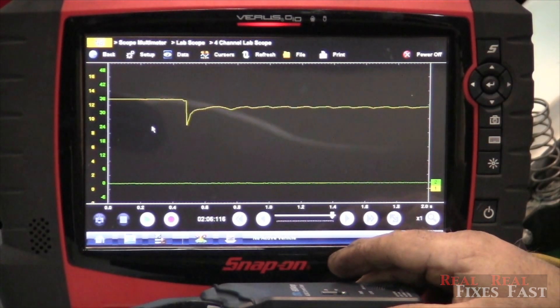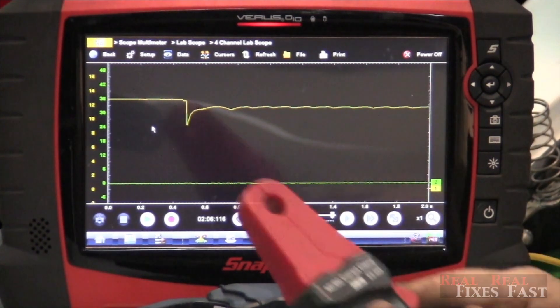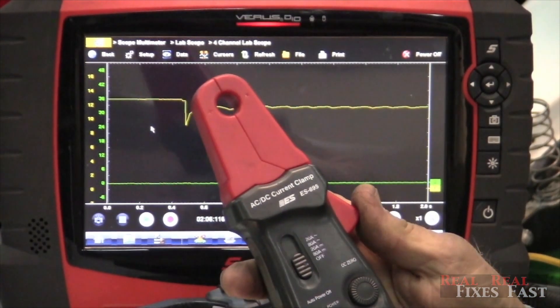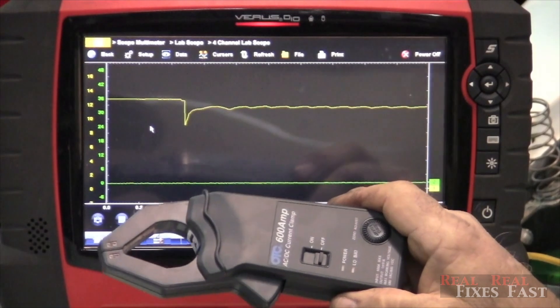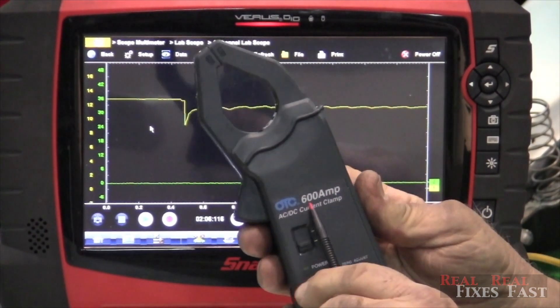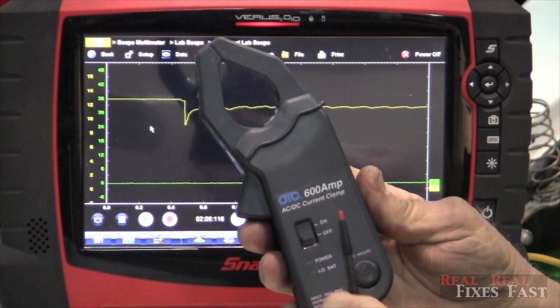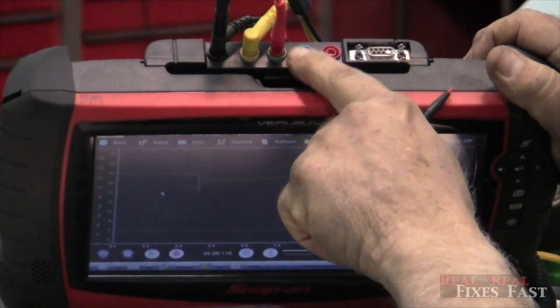Okay now to look at amps on a starter. Now you know of course the starter pulls more amps than anything else in the vehicle. So we can't use a low amp clamp like we do for fuel pumps. We have to actually use a higher amp. Now I recommend we get one that is for 600 amps. We plug it into the top just like everything else on channel two.